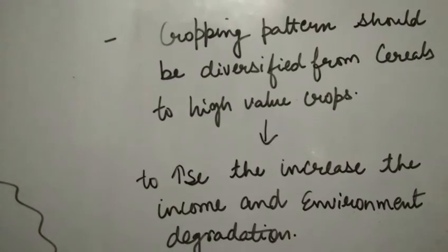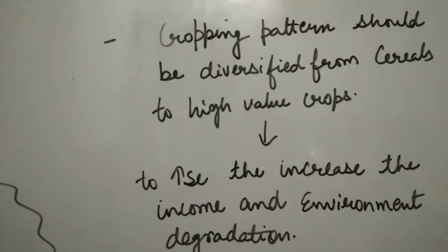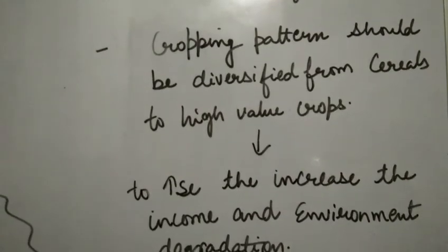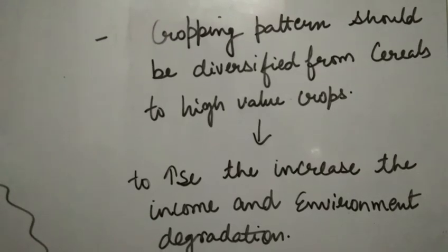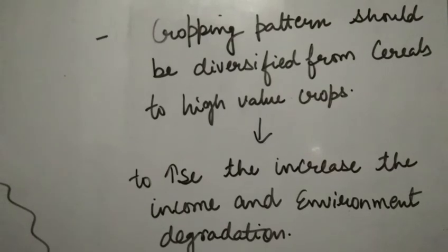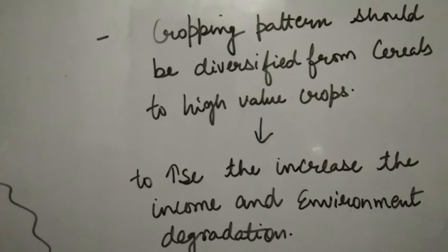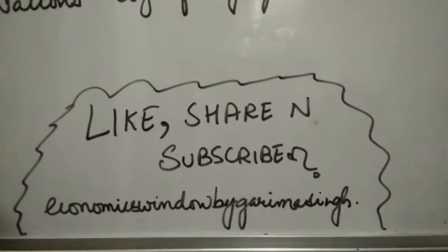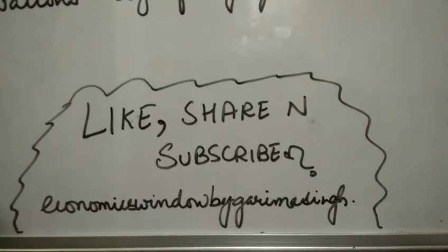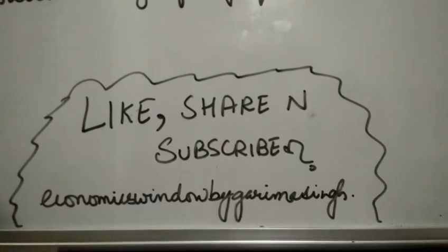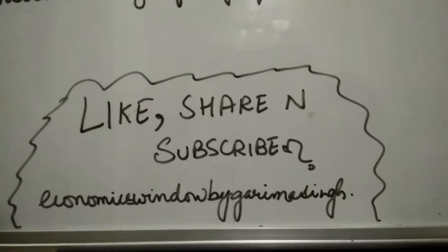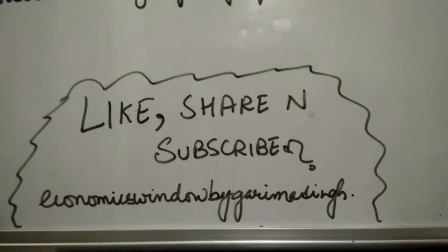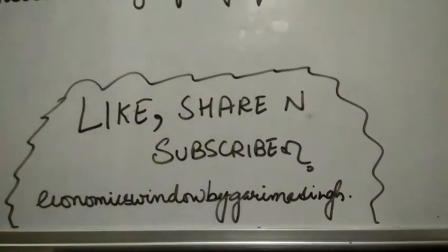So that concludes Chapter 4 on Agriculture. We have studied what agriculture is, different types of farming, major food crops and non-food crops, the relation of the agriculture sector with other sectors, and today's important topic on food security — the issues, problems, and solutions. I hope all the concepts are clear. Thank you so much for watching! If you found this video helpful, please press the thumbs up icon, subscribe to Economics Window by Garima Singh, and like, share, and subscribe.